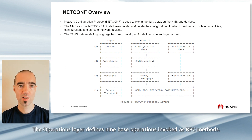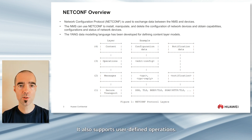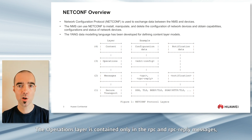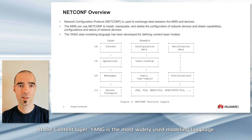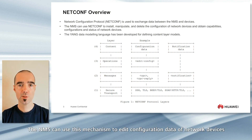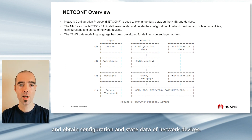The operations layer defines nine base operations invoked as RPC methods. It also supports user-defined operations. The operations layer is contained only in the RPC and RPC Reply messages, but not notification messages. At the content layer, YANG is the most widely used modelling language. The NMS can use this mechanism to edit configuration data of network devices and obtain configuration and state data of network devices.